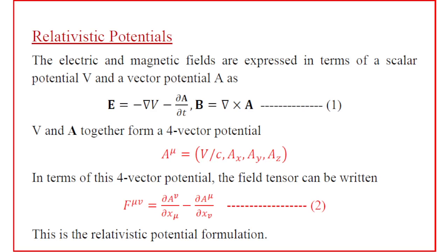In relativity, this scalar potential V and vector potential A together form a four-vector potential. A^μ = (V/c, Ax, Ay, Az). This four-vector potential has four components: the three vector potential components Ax, Ay, Az are indices one, two, three, and the zeroth component is V/c.